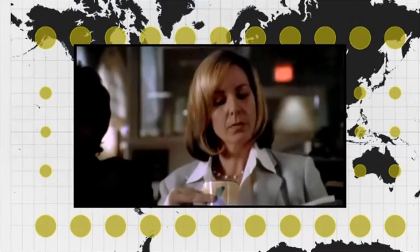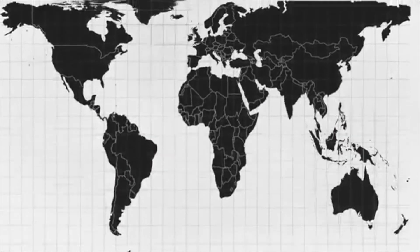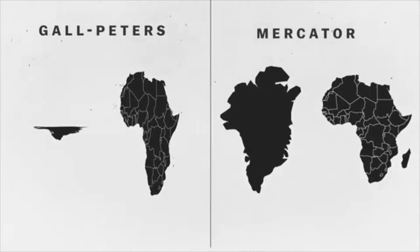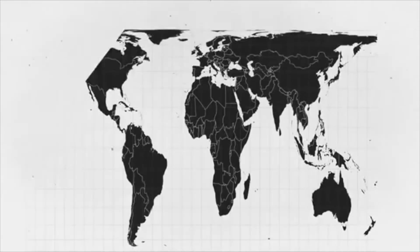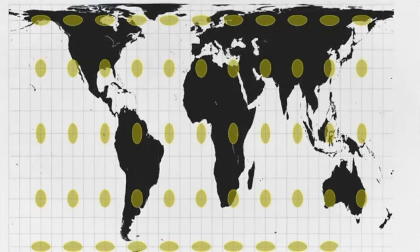One modern critique is that the Mercator projection has fostered European imperialist attitudes for centuries and created an ethnic bias against the third world. So if you want to see a map that more accurately displays land area, you can use the Gall-Peters projection. This is called an equal area map. Look at Greenland and Africa now — the size comparison is accurate, much better than the Mercator. But it's obvious that the country shapes are totally distorted. Here are those dots again so that we can see how the projection preserves area while totally distorting shape.